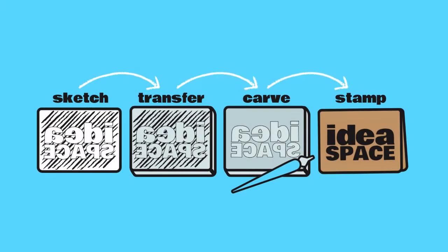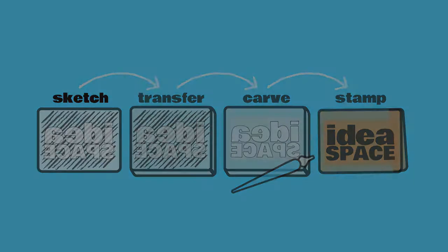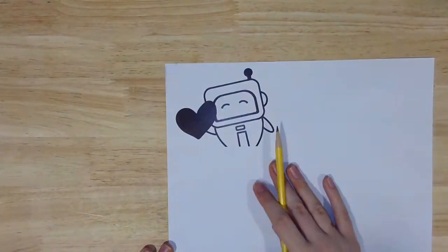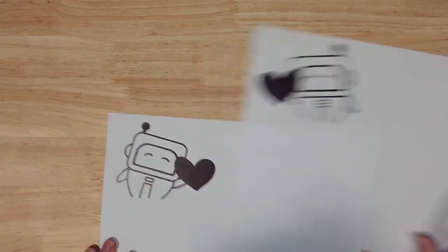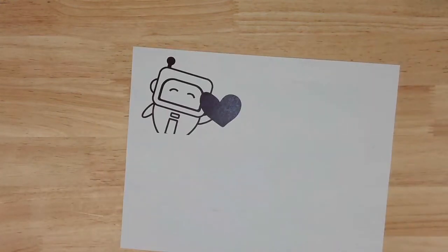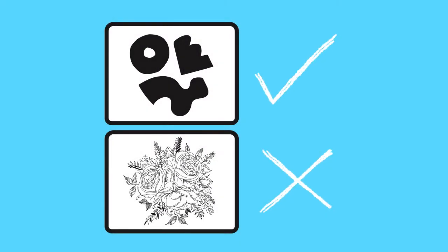Keep in mind that once you carve the block you'll flip it over to print, so any text or images will be mirrored from your original drawing. For example, to make sure our Idea Bot prints with their antenna on the correct side, we'll be working from a mirror image of the design we want. If you've never block printed before, we recommend choosing an image with large simple shapes and straight lines like an abstract geometric print since it will be easier to carve.